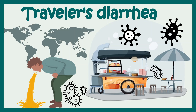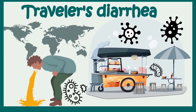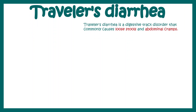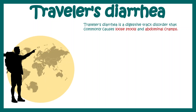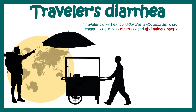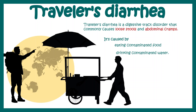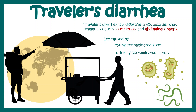In this video, we'll talk about traveler's diarrhea. Traveler's diarrhea is a digestive tract disorder that commonly causes loose stools and abdominal cramps. It is caused by eating contaminated food or drinking contaminated water. The key causative organisms range from viruses, bacteria, or even parasites.